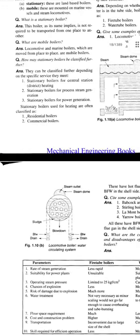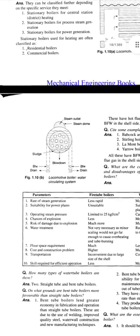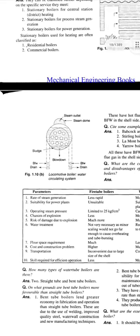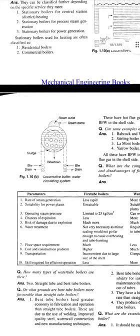The locomotive boiler water circulating system is quite simple. Feed water inlet is on the left side of the tube and drain is also on the left side. Feed water and drain are also on the right side. Sludge collects at the bottom of the drum. Steam outlet is provided on the top of the dome.